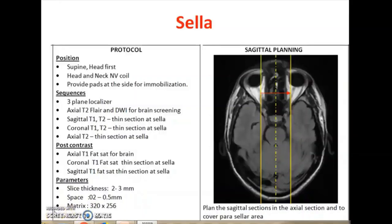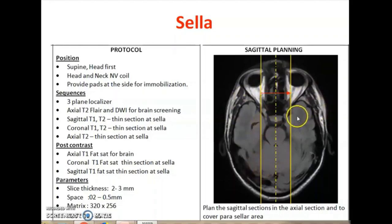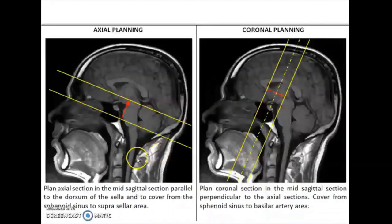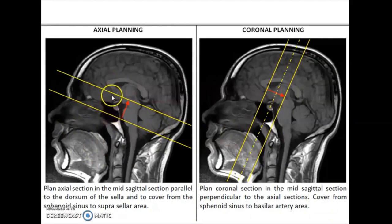The protocol for the sella uses the same surface coil: axial T1, T2, coronal T1, T2, and axial T2 is sufficient. The post-contrast study has to be done. If you get a microadenoma, a dynamic contrast study has to be done. In sagittal planning, take the axial section and plan the parasagittal sections, covering some parasagittal sections too. Cover the sphenoid sinus and some suprasellar area. If a lesion is seen, cover up to the extension of the lesion. Take the sagittal and plan the coronal planes perpendicular to the dorsum of the sella.